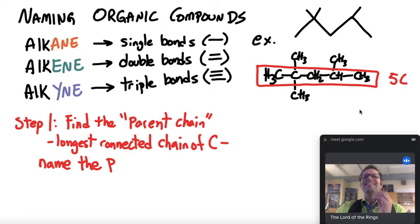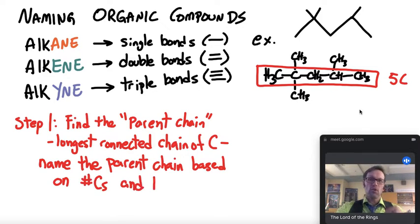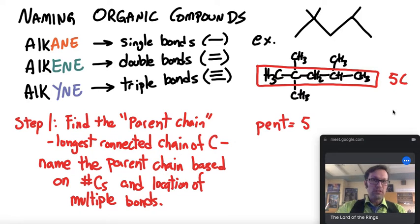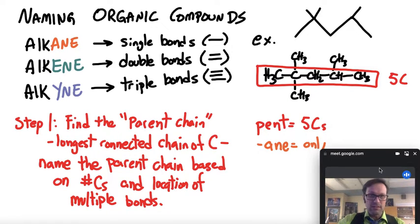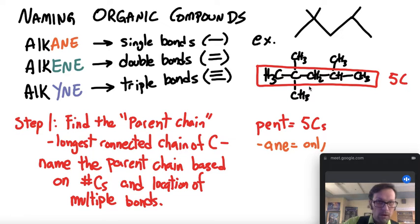The other thing that you need to understand is you need to name the parent chain based on how many carbons that it has and the location of the multiple bonds. So for right now, you can see that we have five carbons and the prefix for five carbons is pent, like a pentagon, right? Five sides or five carbons. And we need to be able to label this. Now looking at the bonds, you can see that there are only single bonds here. There's only single bonds.